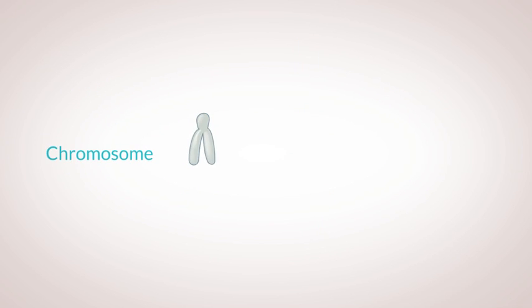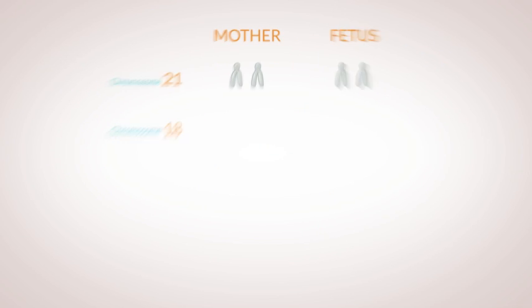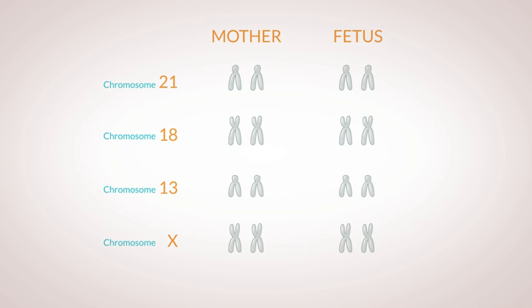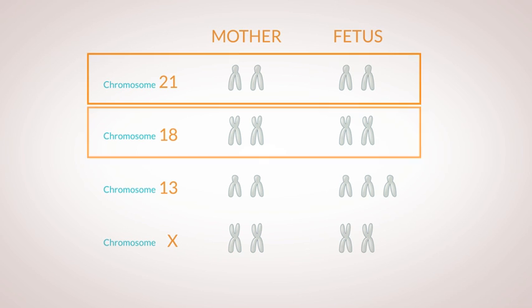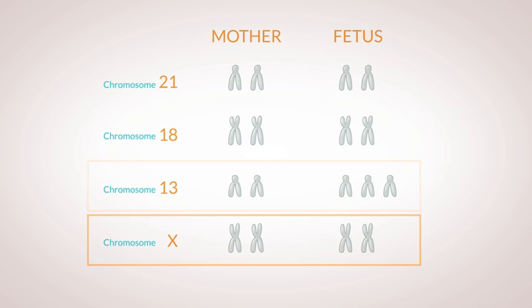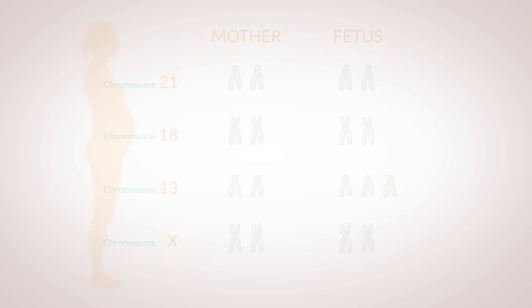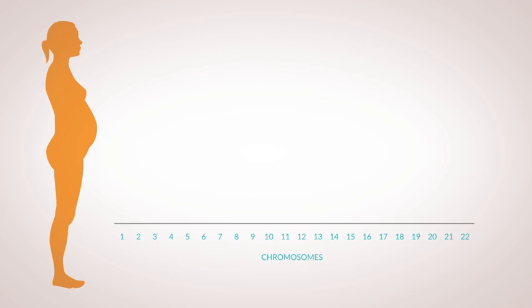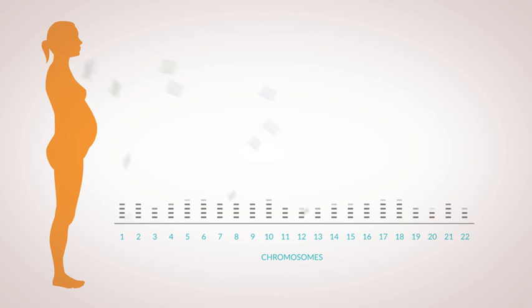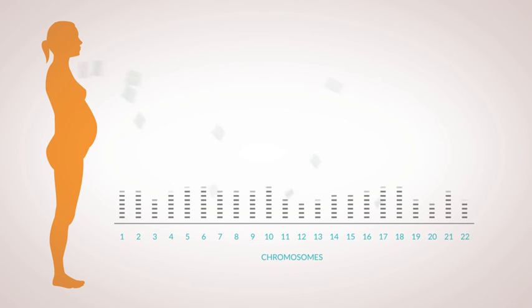This method performs equally well across all chromosomes and allows the Panorama test to report risk scores with extremely high accuracy across all conditions tested. This method is unique from other non-invasive prenatal tests that all rely on something called counting, or a quantitative method.